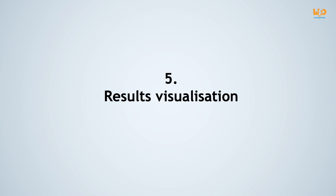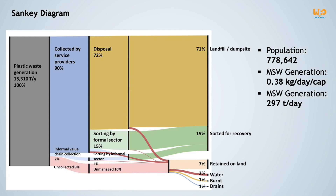This is the Sankey diagram resulting from the data inputs we have just shown you. The numbers shown here are for plastic waste only. Firstly, the collection coverage of plastic is quite high — 90% of the total plastic waste generated is collected by formal service providers. Secondly, 8% of the total plastic waste remains uncollected, and when you add up the leakages from the collection and disposal stages, unmanaged plastics represent 10% of the total plastic waste generated.